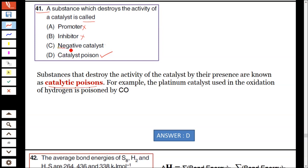There is a difference between negative catalyst and catalytic poison. For example, the platinum catalyst used in the oxidation of hydrogen is poisoned by carbon monoxide. Hence this carbon monoxide is not a negative catalyst, it is a catalytic poison. The substance which destroys the activity of a catalyst is called catalytic poison.